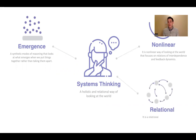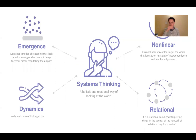We then talk about networks and a relational paradigm — systems thinking as this way of looking at the world in terms of connectivity and networks. And finally, talking about dynamics and system structure, feedback loops and so on.